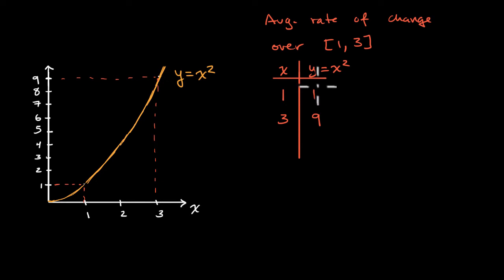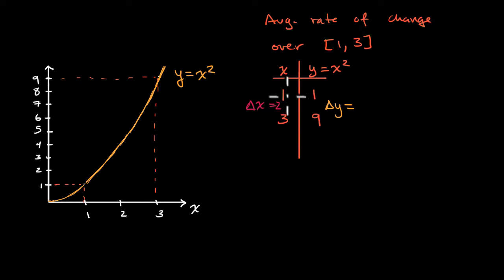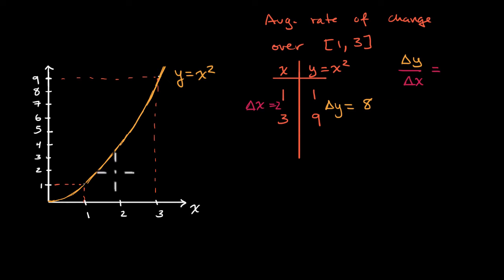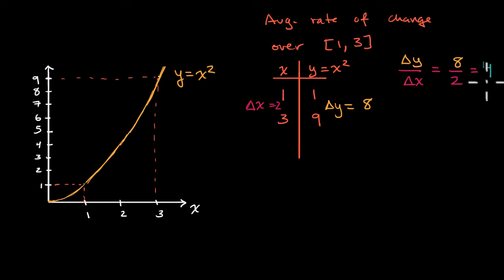To figure out the average rate of change of y with respect to x, we ask: what's our change in x? We can see clearly that our change in x over this interval is equal to positive two. And what's our change in y? When x increased by two from one to three, y increases by eight, so it's a positive eight. Our average rate of change is change in y over change in x, which equals eight over two, which equals four. On average, every time x increases by one, y is increasing by four.